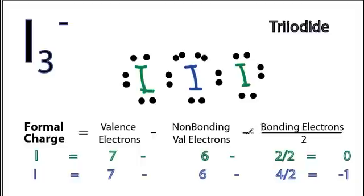For the iodine in the middle, the blue iodine, 7 valence electrons for iodine, we have 6 nonbonding. So these 4 up here aren't bonding, and these 2 down here. So 6 nonbonding valence electrons. And then we have 2 plus 2, 4 bonding valence electrons, which we'll divide by 2. 7 minus 6 minus 2 gives us a negative 1 charge.